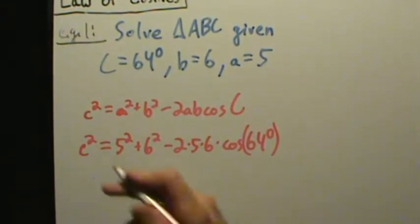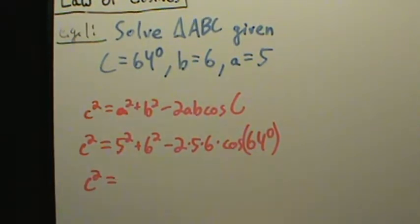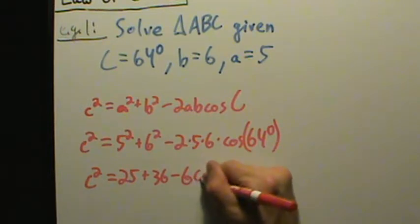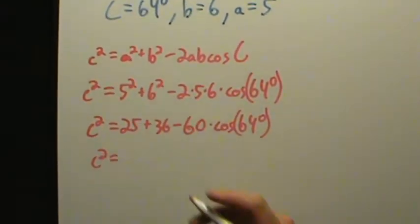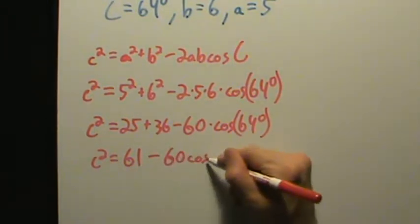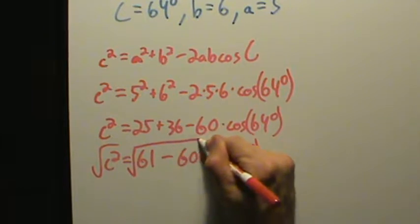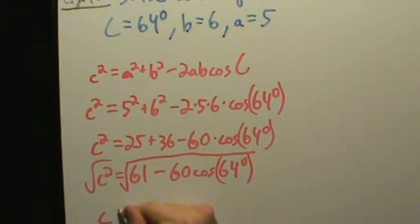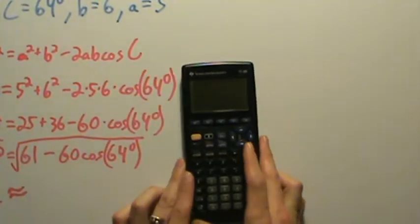Let's simplify. 5² = 25, 6² = 36, 2 × 5 × 6 = 60. So c² = 61 − 60·cos(64°). Now we take the square root of both sides. Since c is the length of a side of a triangle, c cannot be negative, so we only take the positive root. Pulling out our calculators and making sure we're in degree mode: √(61 − 60·cos(64°)) ≈ 5.8905.